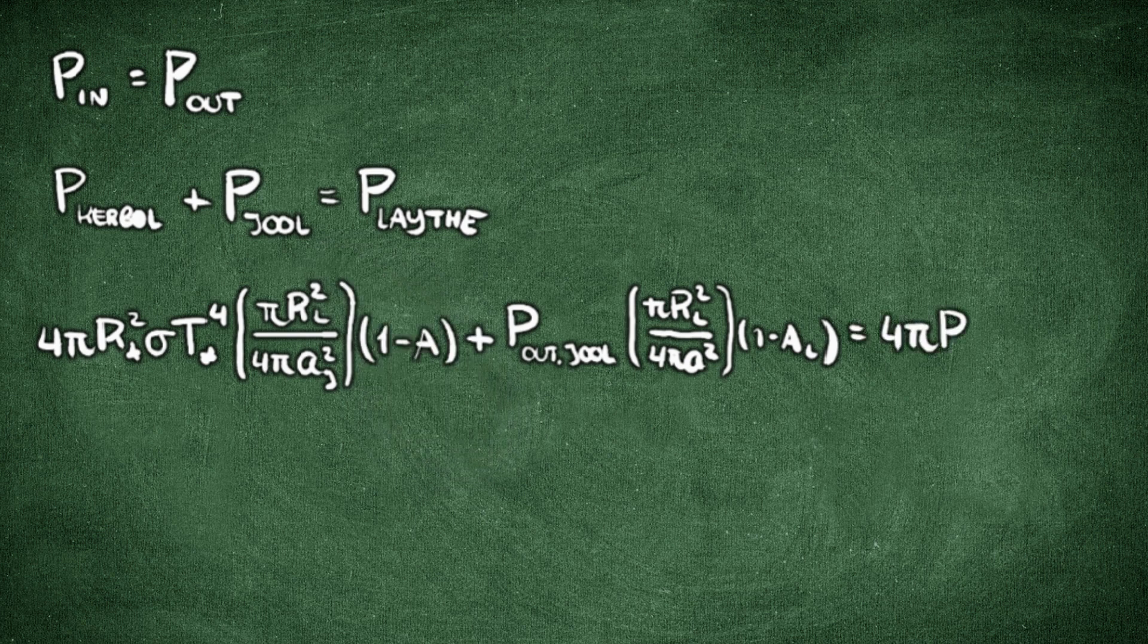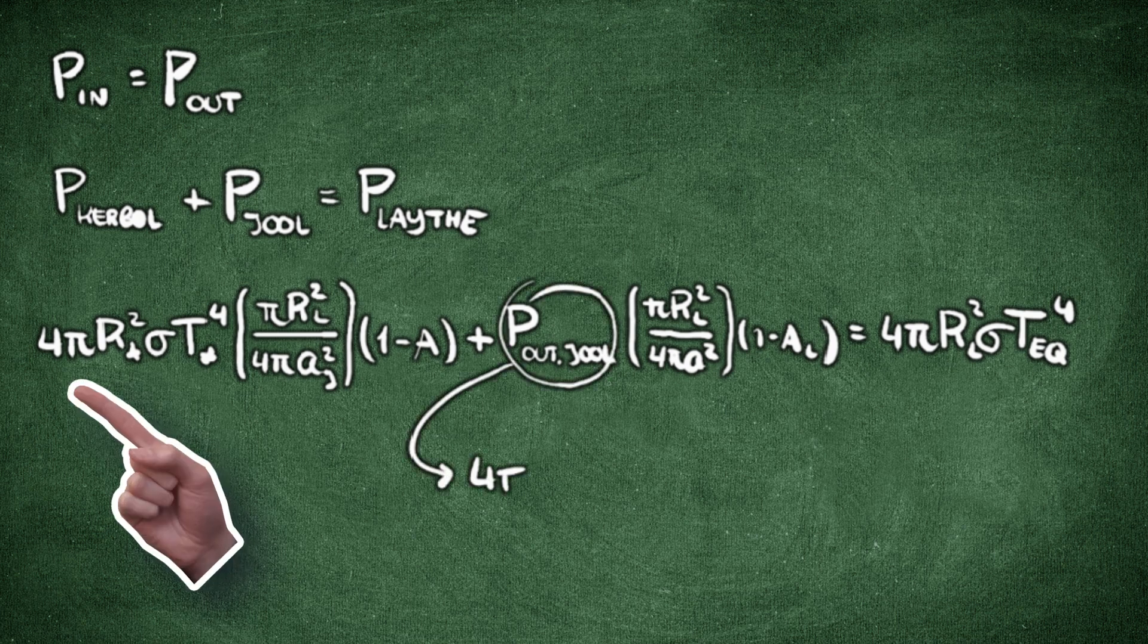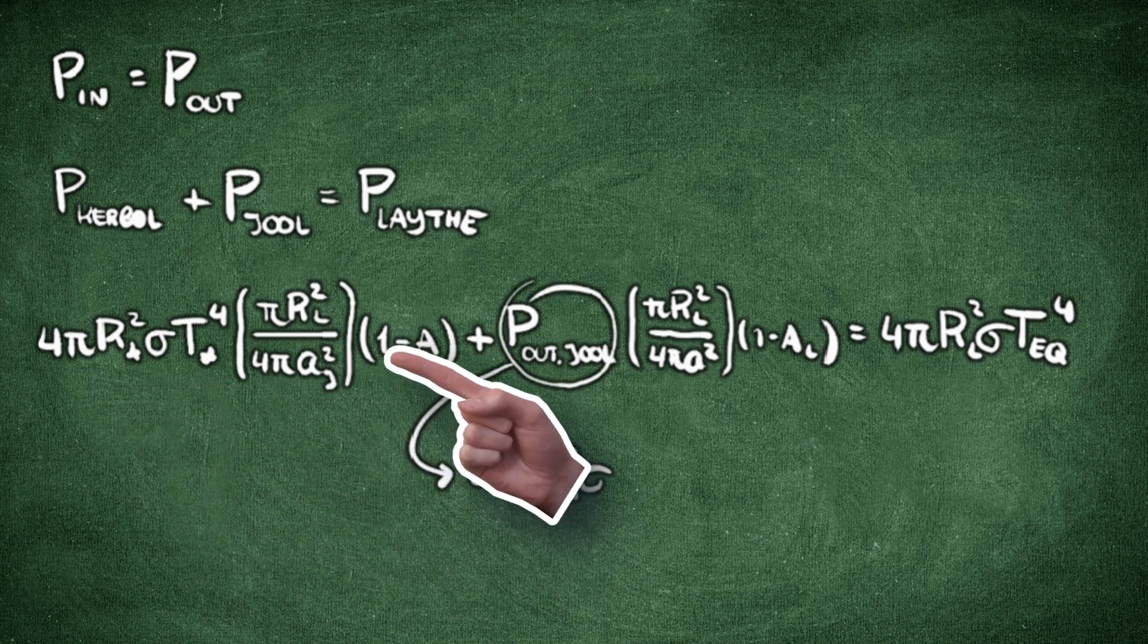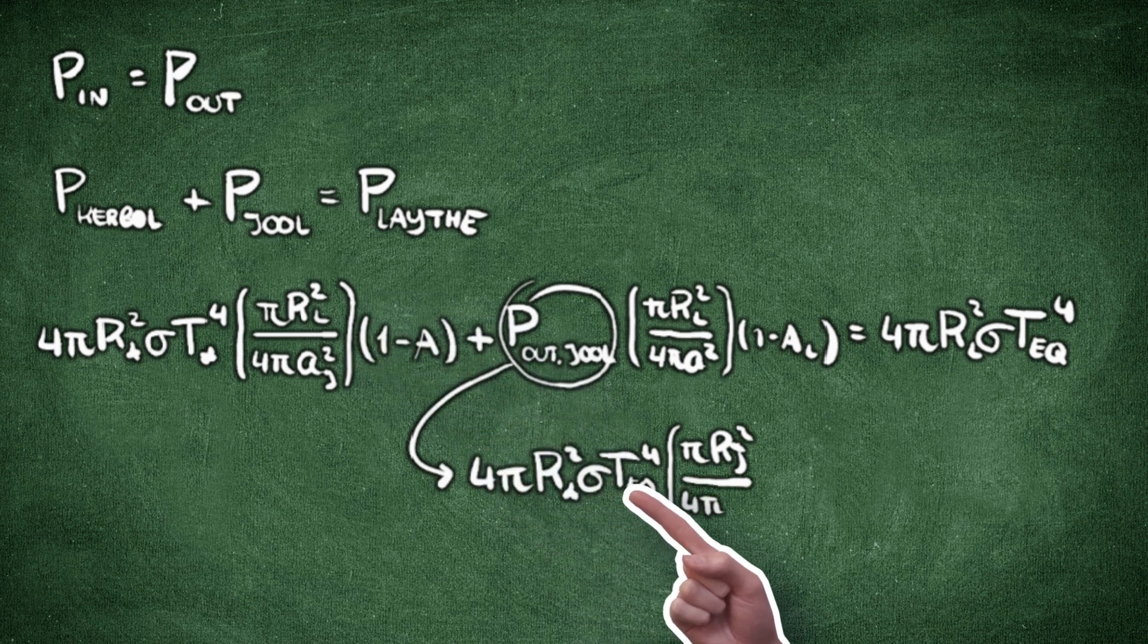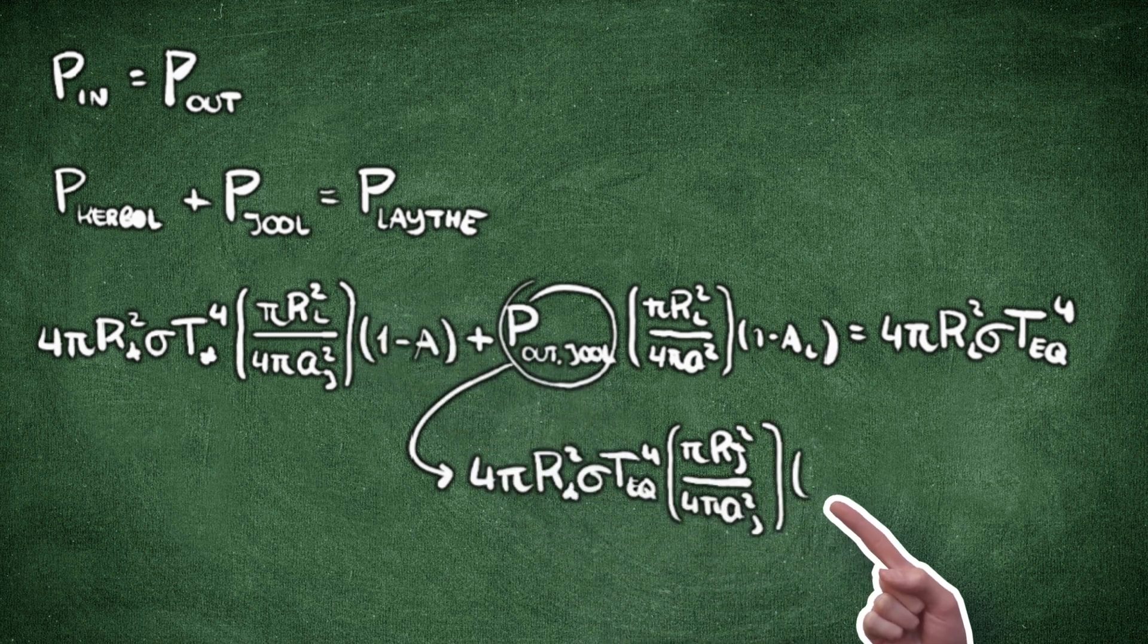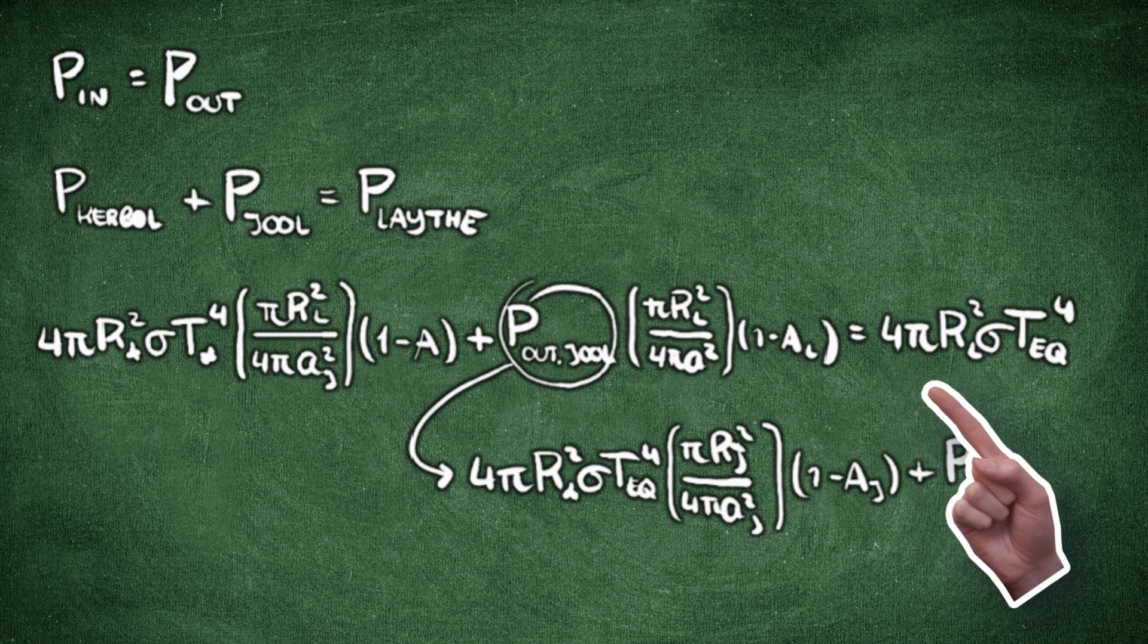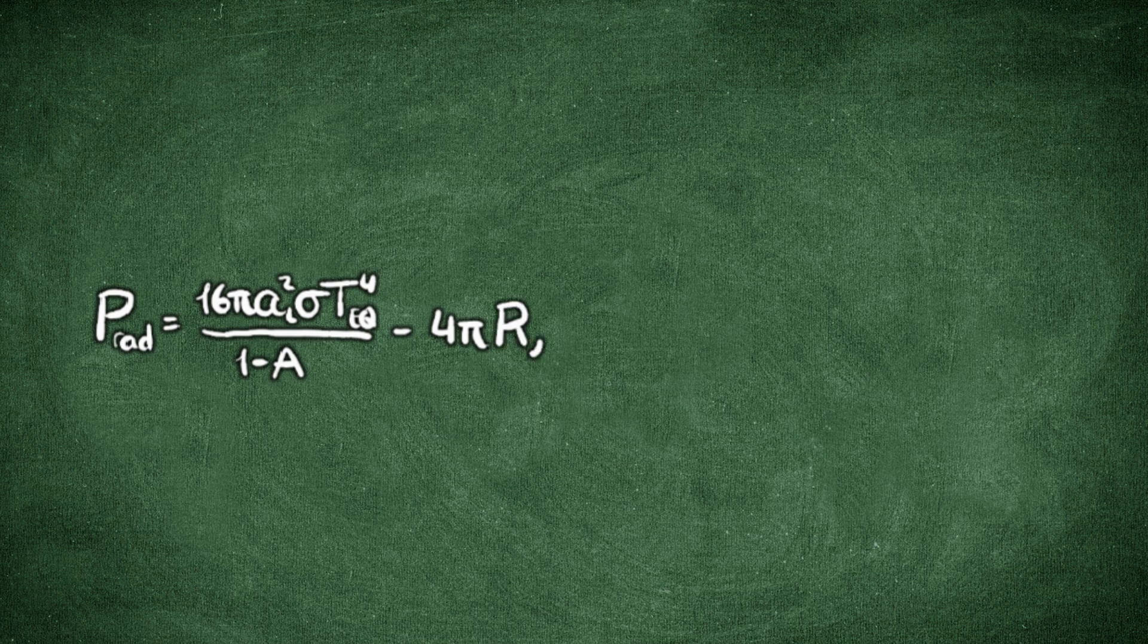I want to know how much radiation is needed to heat up Leith to 277 Kelvin. From Leith's perspective, the input is the light from Kerbal, and this is the fraction of the light that arrives at the moon. And this is the thermal radiation emitted by Joule through the radioactive core. And this side is the output of Leith. If we rearrange this equation, we have an expression for the power being emitted by Joule itself due to radiation.